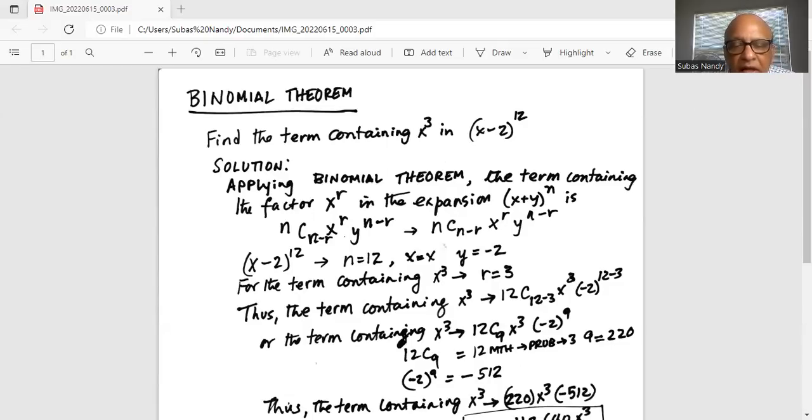The term containing x^3 is 12C9, combination of 12 things taken 9 at a time, multiplied by x^3 and minus 2 raised to the power of 9.